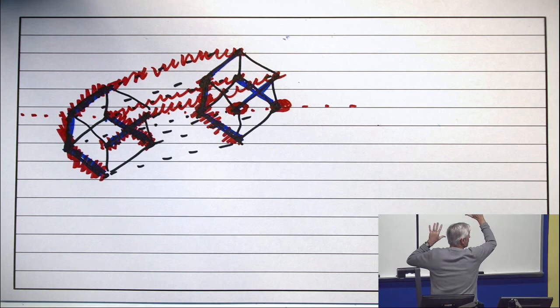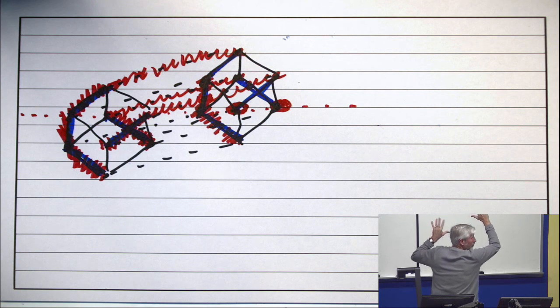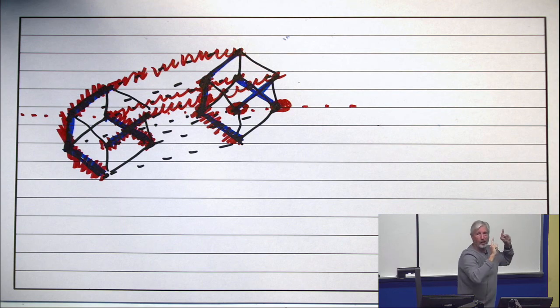None of the red chains are symmetric anymore. But they come in pairs, and there are six pairs, right?